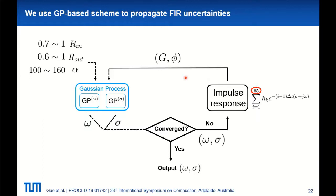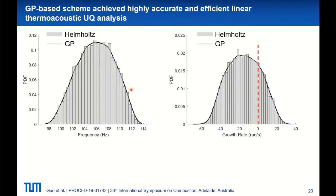Our goal is to propagate those uncertainties to the frequency and growth rate predictions. We use the surrogate-based scheme discussed earlier to do the UQ analysis. In addition to the uncertain flame parameters, we also consider R_in, R_out, and alpha — three uncertain acoustic parameters. In total, this is a 68-dimensional UQ problem. For each sample of impulse response coefficients and R_in, R_out, alpha, we perform the iteration loop. In total, we used 20,000 samples to perform Monte Carlo.